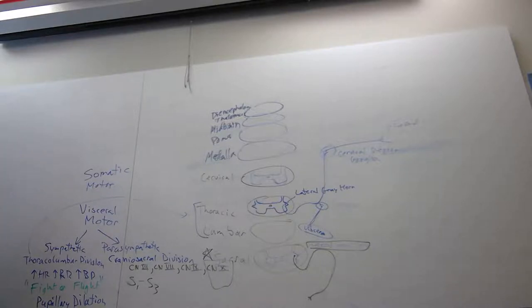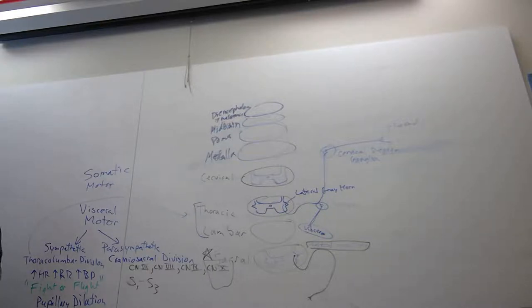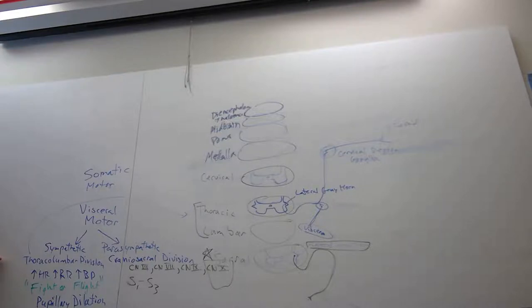Cranial nerve three does pupillary constriction and the accommodation response. When something gets closer to you, you take your lens and make it thinner or fatter — if you relax it, you make it fatter to take the image and fall it onto the retina as it gets closer. If you cannot respond that way, your accommodation response is slowly degrading — little by little, each process is shutting down.